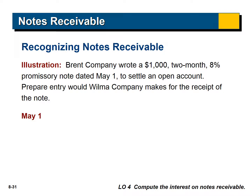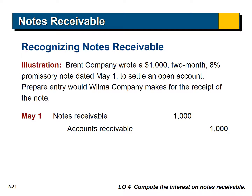Brent Company wrote a $1,000, two-month, 8% promissory note dated May 1st to settle an open account. Prepare the entry Wilma would make for receipt of the note. We debit notes receivable and credit accounts receivable. When you see 'to settle an open account,' that means an accounts receivable — we're swapping a notes receivable for accounts receivable. Companies do this when they're having trouble making payment: we extend the terms but start charging interest.